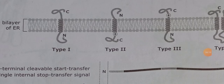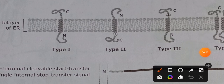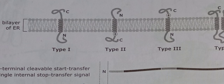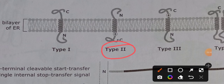Now for Type 2 transmembrane protein — a key difference from Type 1 is orientation: in Type 1 the N-terminus is at the ER lumen, but in Type 2 the C-terminus is at the ER lumen side. Additionally, Type 2 has only one signal sequence (unlike Type 1's two), which acts as both the start-transfer and the stop-transfer signal sequence, and it is non-cleavable.